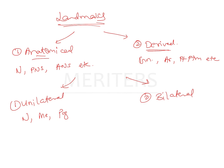Bilateral landmarks are those which are going to superimpose on each other. For example, the porion — the opening of the external auditory meatus. There are two porions present in each patient, but the lateral cephalogram is only a one-dimensional representation of a three-dimensional structure. So whatever structures are two in number on the lateral cephalogram are all going to superimpose, and this superimposition of bilateral structures sometimes makes it difficult to identify the precise point on the radiograph.